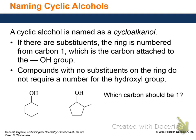Cyclic alcohols are named as cycloalkanols, using the same process as regular alcohols. Name the parent ring, then add the '-ol' suffix. For example, a six-carbon ring is cyclohexane — remove the '-e' and add '-ol' to get cyclohexanol.